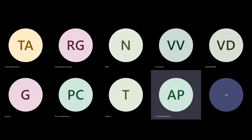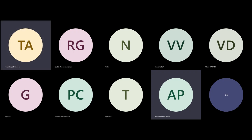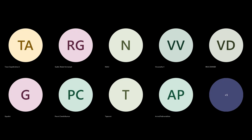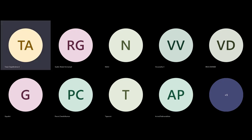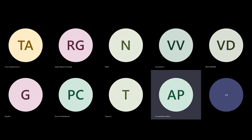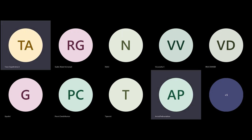Tarun, you mentioned categorical data — furnished, semi-furnished, and unfurnished — and you made it three separate binary features. My question is: can we not instead have a single feature and say zero, one, two? Will that work just as well?